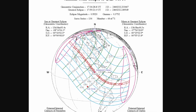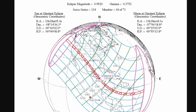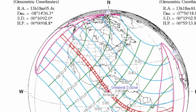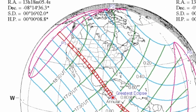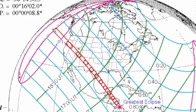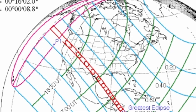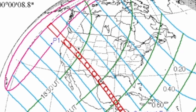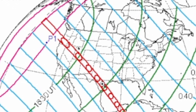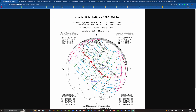Looking at the path of annularity from Oregon all the way down to Texas, the red line from the NASA eclipse website shows where the anti-umbra shadow will be tracking across the western US. Many areas outside of the path of annularity will just see a partial solar eclipse, with the annular solar eclipse ending in northern and eastern Brazil right around sunset.